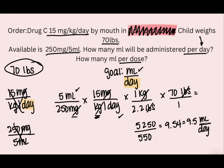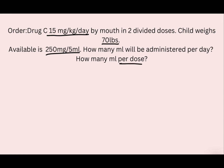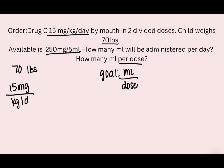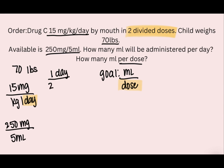Now let's figure out the milliliters per dose. The goal is mL on top and dose on the bottom. The same puzzle pieces apply: patient weight of 70 pounds, the prescription of 15 milligrams per kilogram per day, and the concentration of 250 milligrams per five milliliters. Since the goal has 'dose' but the order has 'day,' we need an extra piece to cancel both: there are two divided doses in one day, so one day over two doses becomes our additional puzzle piece.